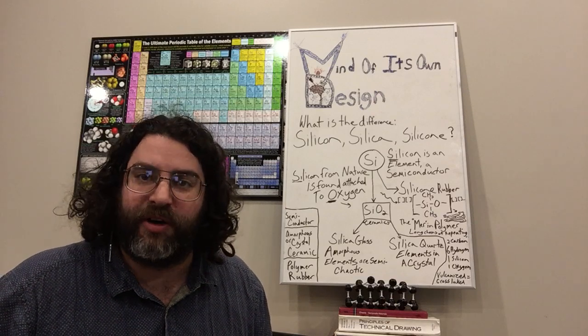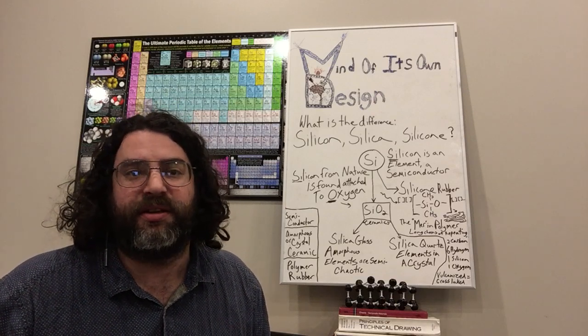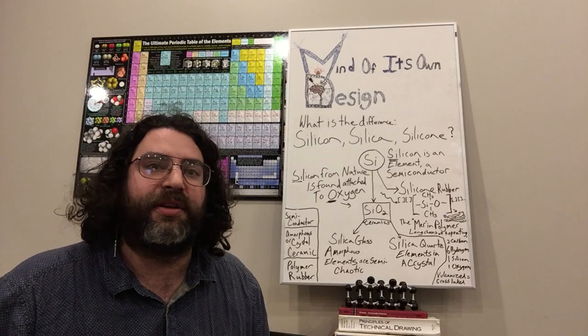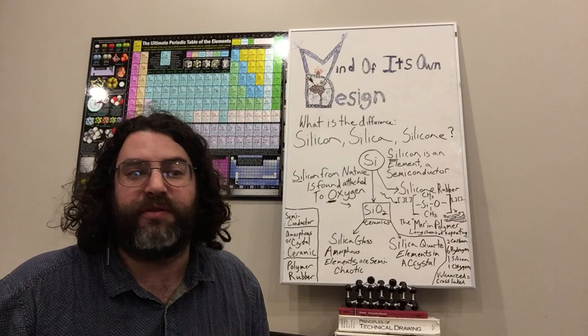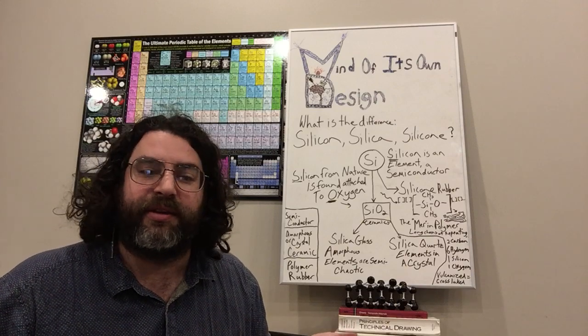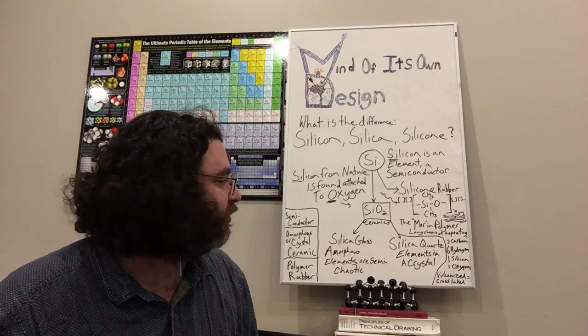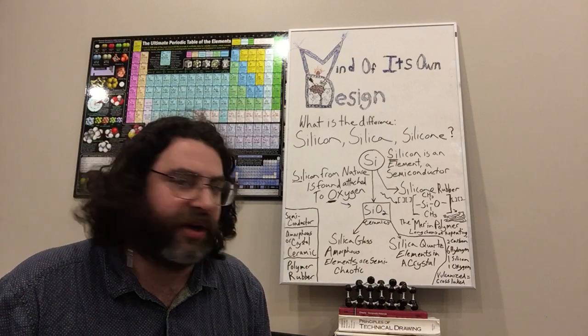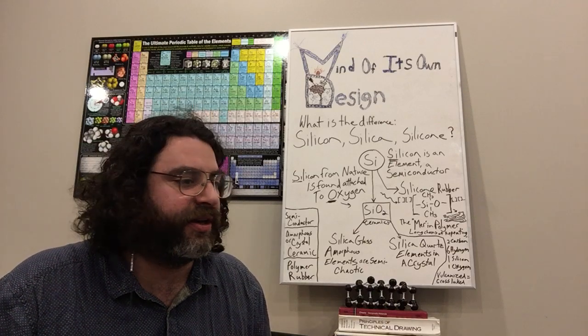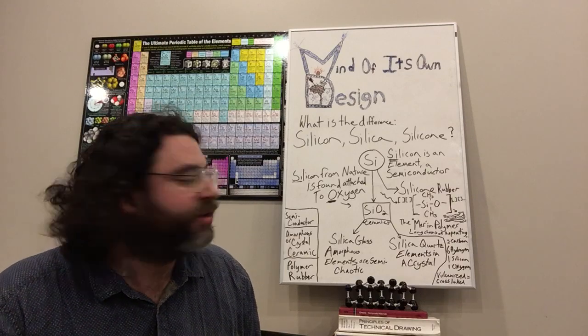You've probably heard of vulcanized tires, which means that the rubber and tires is cross-linked so that it retains its shape, even though it's flexible and rubbery, for lack of a better word, and soft, but still remaining in its shape. Silicone rubber is the same.